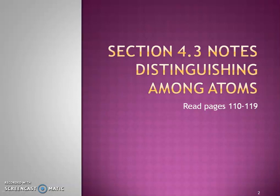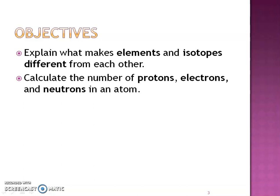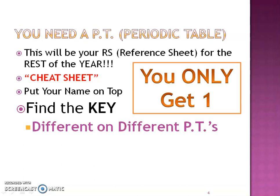This is Mrs. O'Neill for Chapter 4, Section 3: Distinguishing Among Atoms. In this section, you're going to explain what makes elements and isotopes different from each other, and how to calculate the number of protons, electrons, and neutrons in an atom.